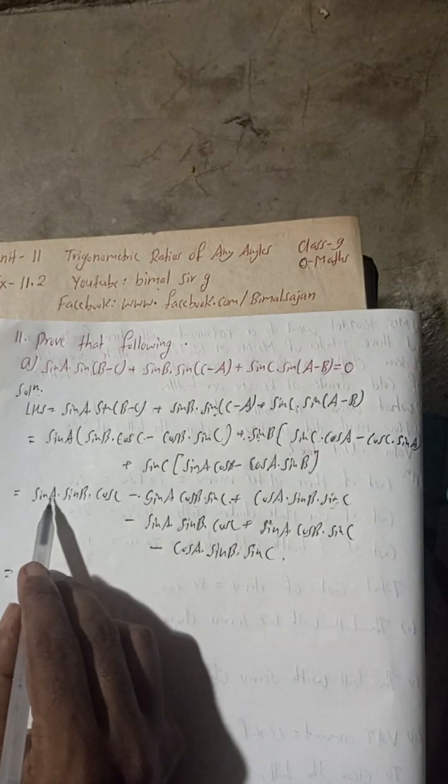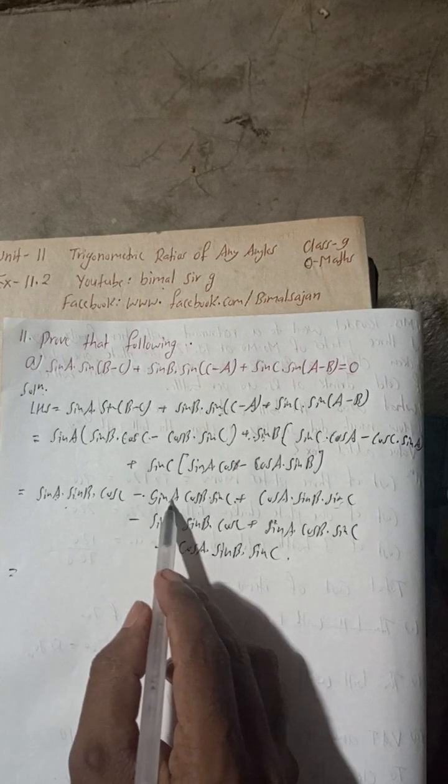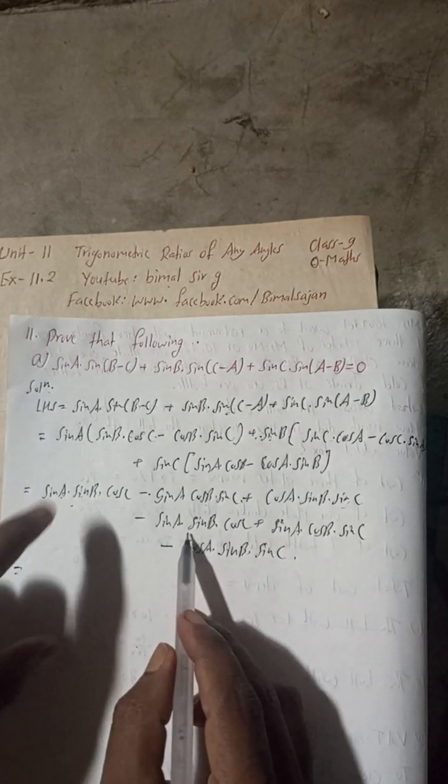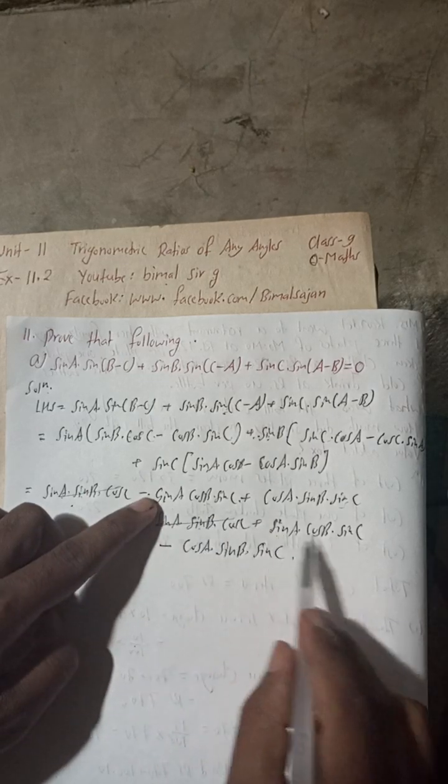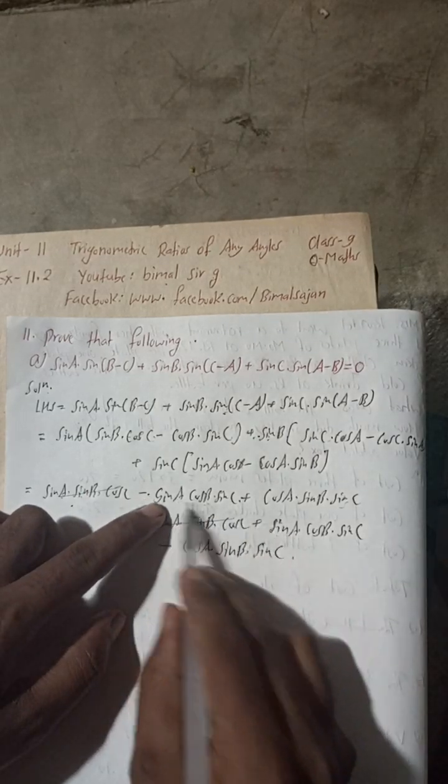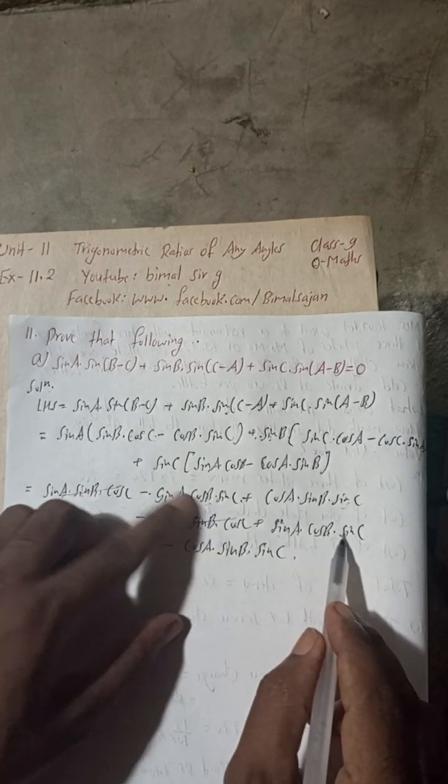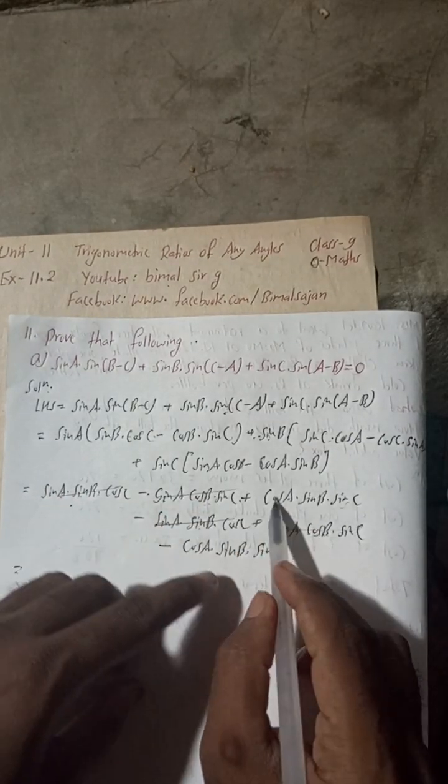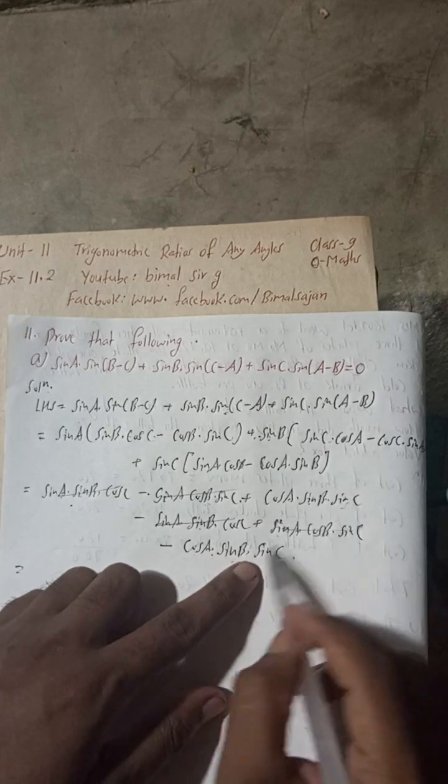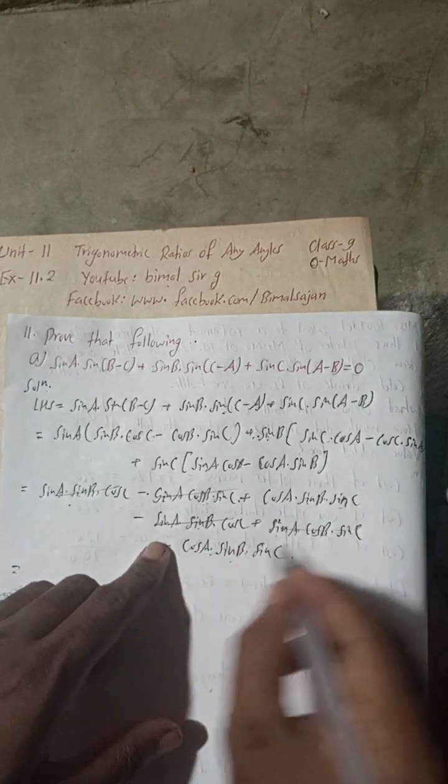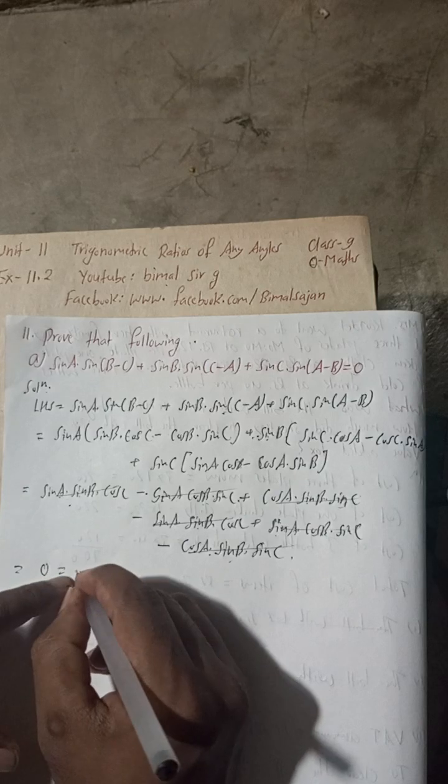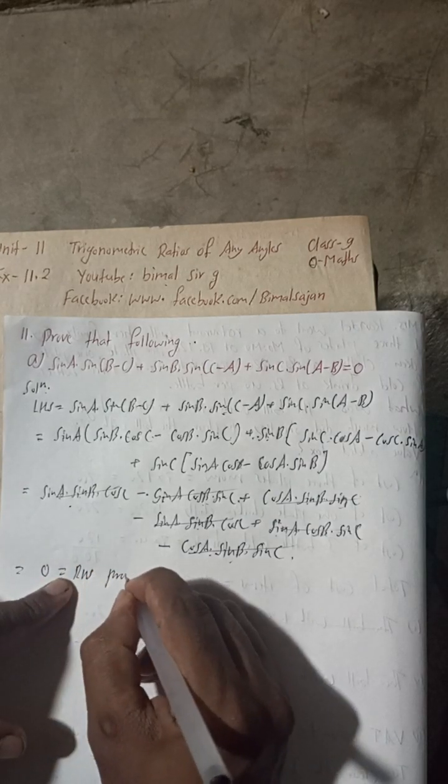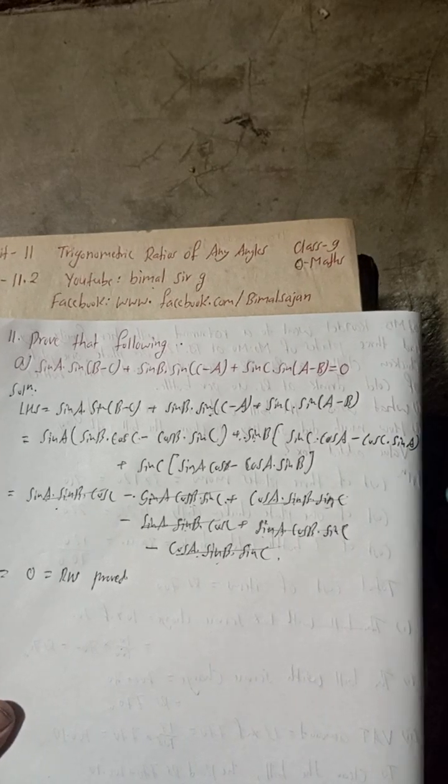Now see there sin A sin B, this is sin A sin B and then cos C. This is plus and this is minus. So this is cancelled here. Now here sin A cos B, see there. This is sin A cos B sin C. This is minus this is plus so this two is cancelled. Now this is cos A sin B and then sin C. This is plus and this is minus so this is cancelled. So everything cancelled means this is equal to zero, so we have proved it is equal to zero, this is RHS proved. So this is the complete solution of 11A.